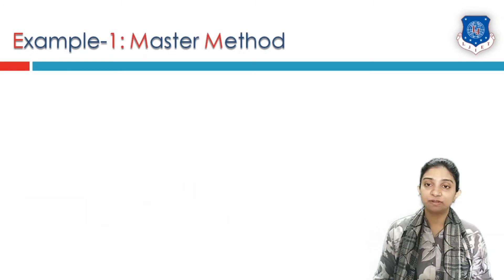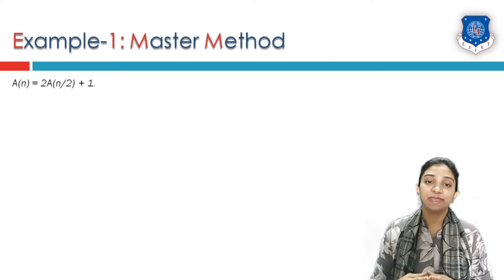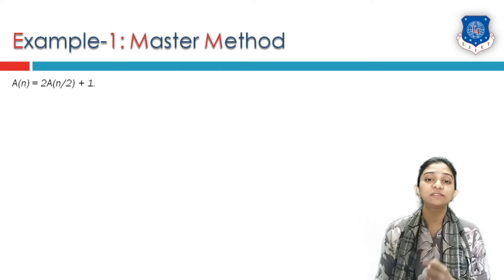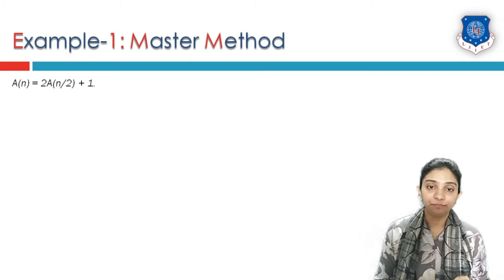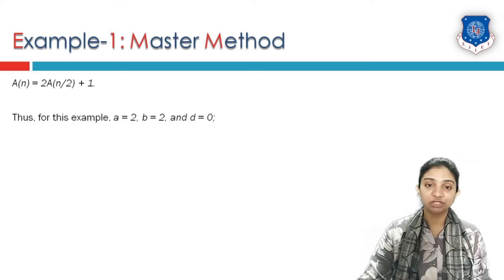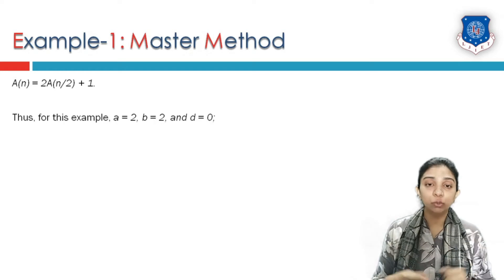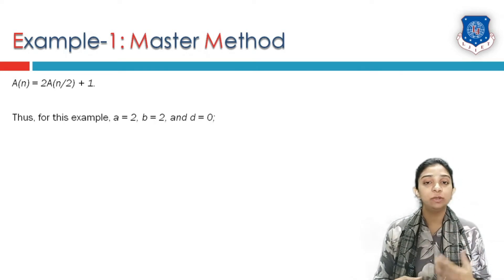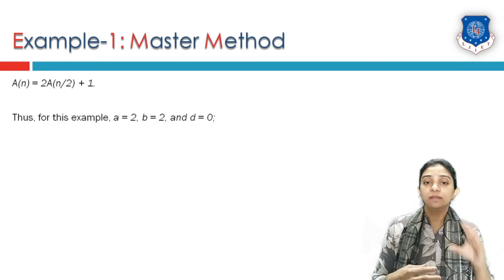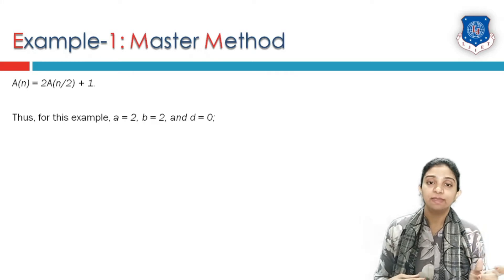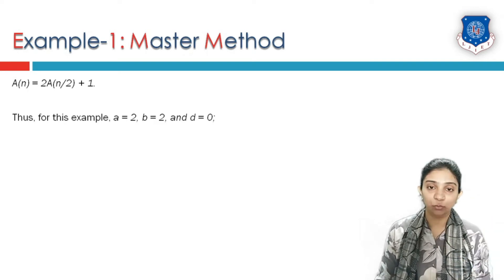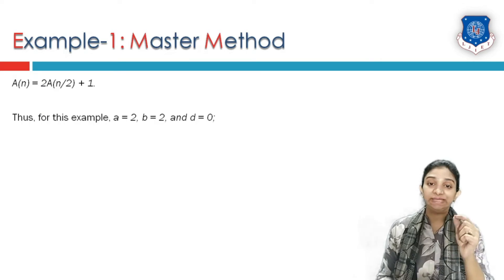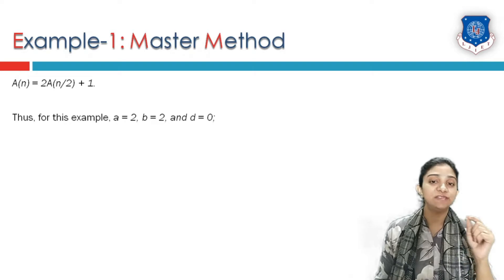Let us look at some examples. Example 1: T(n) = 2T(n/2) + 1. Comparing with the standard form, a = 2, b = 2. Since f(n) = 1 = n^0, the degree of the polynomial is d = 0.